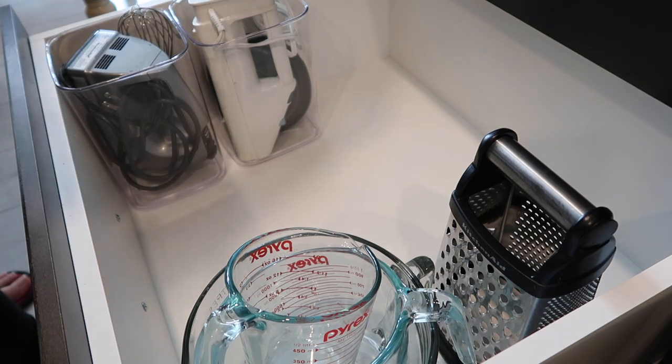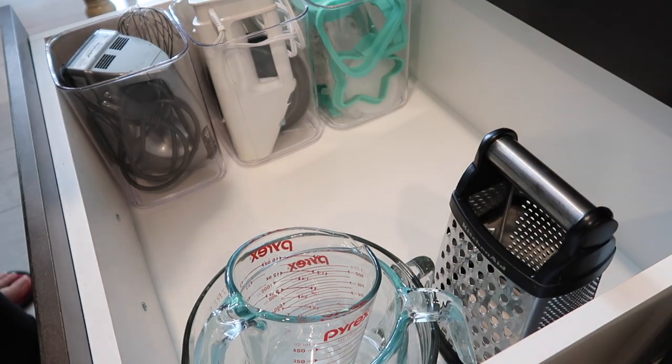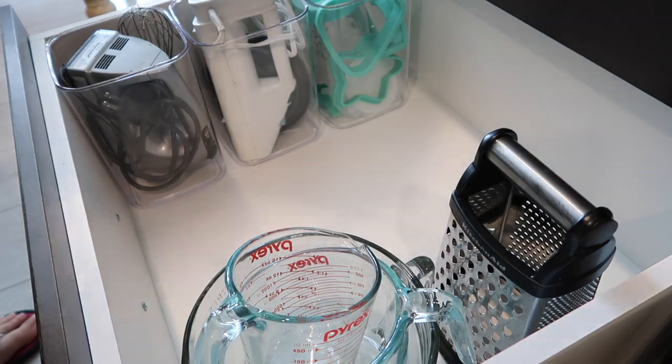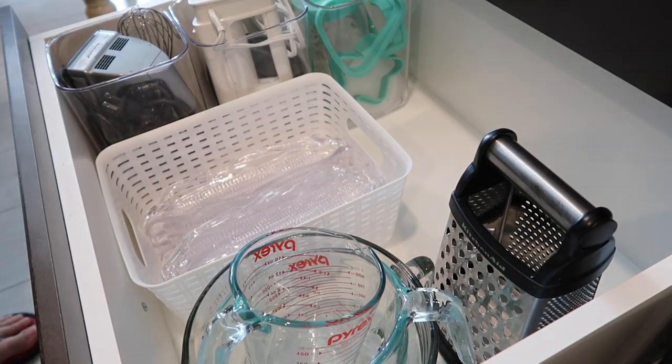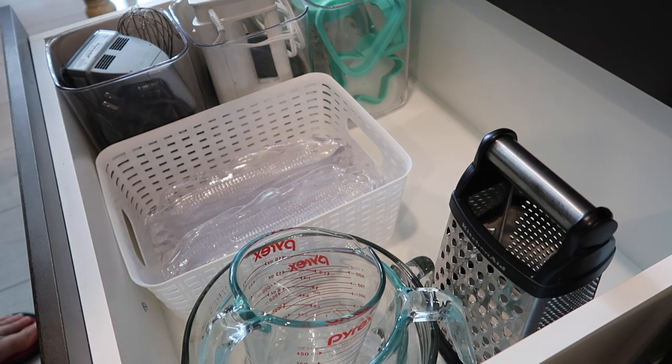And thankfully my KitchenAid hand mixer fit really nicely in the container, as well as our meat slicer and cookie cutters and all of that. It worked out really well utilizing this basket for our corn on the cob holders as well.